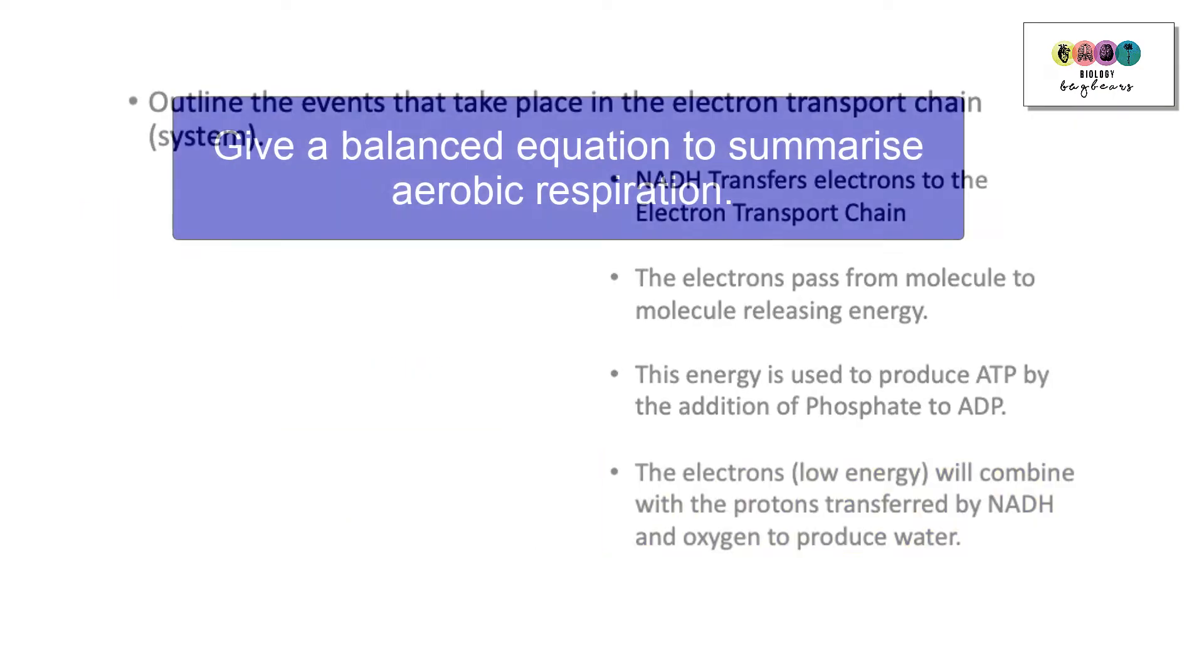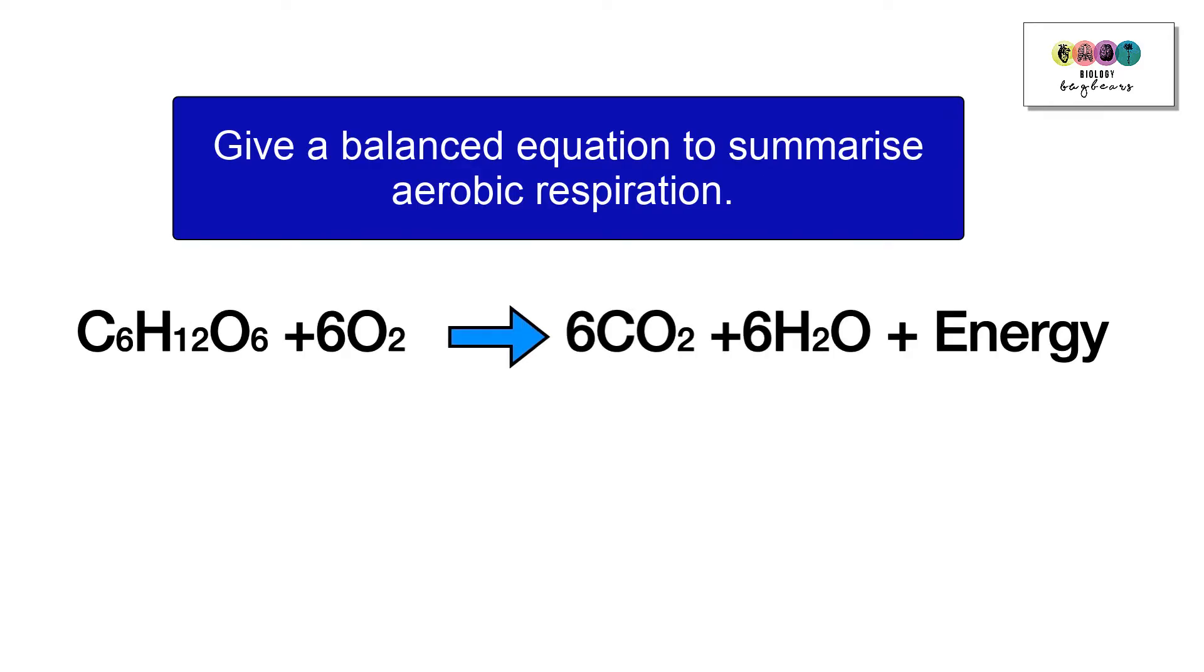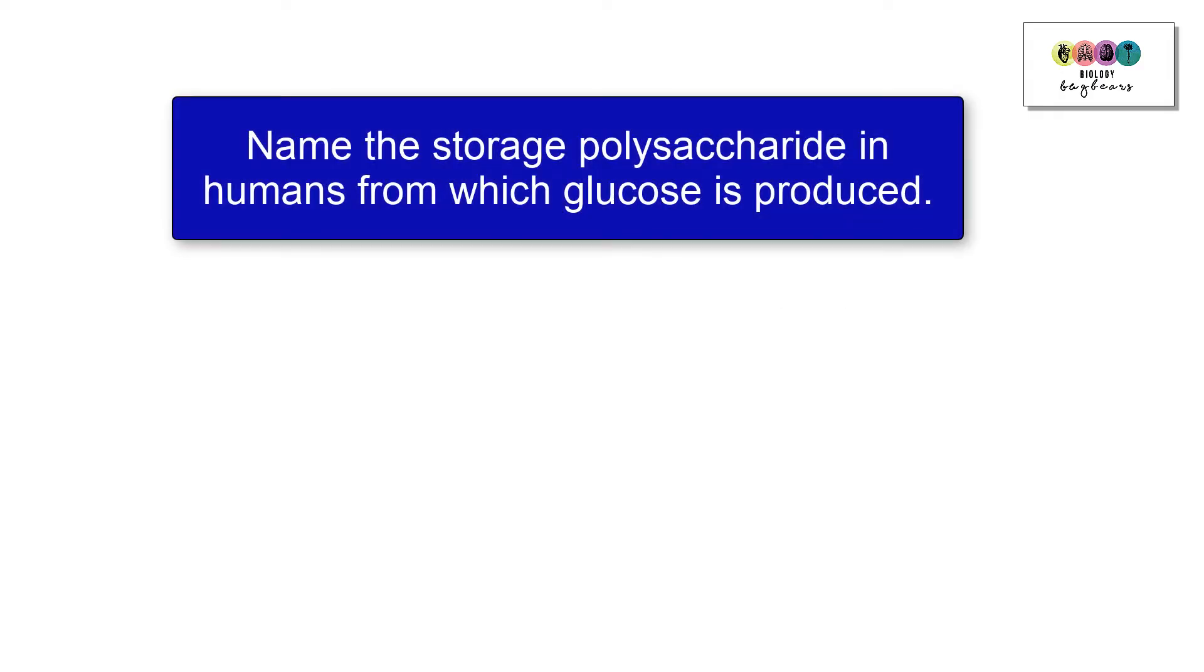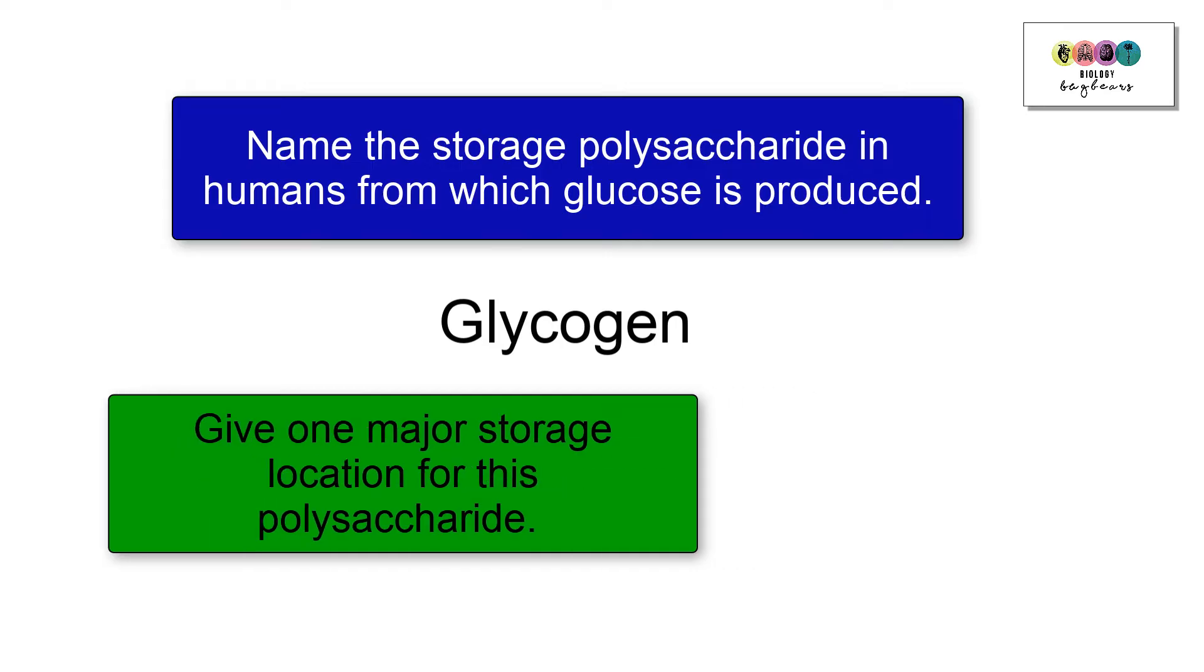Next question: Give a balanced equation to summarize aerobic respiration. Asked quite a lot, so really important that you do know it. Write it out a few times just to make sure that you have it. Name the storage polysaccharide in humans from which glucose is produced. In other words, how do humans store excess glucose? They store it as glycogen. Give one major storage location for this polysaccharide. Where would glycogen be stored in the human body? It's in the liver and muscle cells.